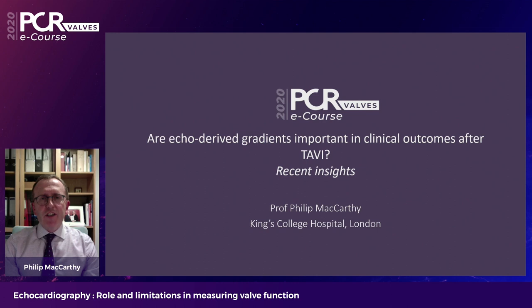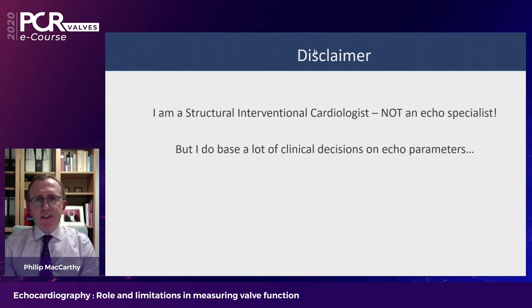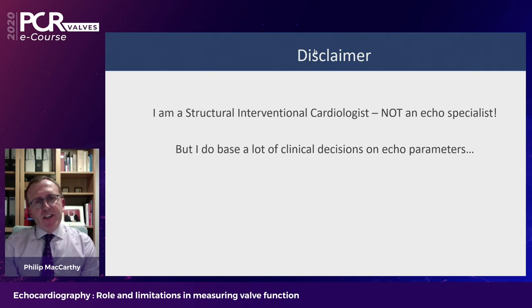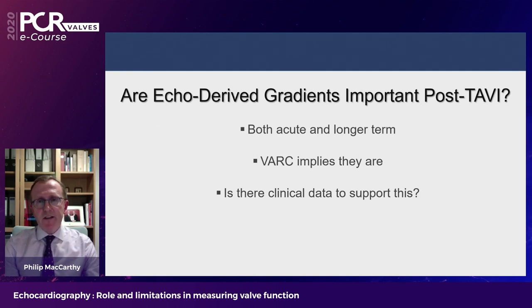Thank you Victoria for that introduction. My role here is to set the scene by talking about whether echo-derived gradients actually correlate with clinical outcomes. My presentation will raise some interesting questions and hopefully stimulate discussion. I'm a structural interventional cardiologist — I'm not pretending to be an echo specialist. But I do base many important clinical decisions on echo parameters that I've always thought I understood, until I started looking into the topics we're discussing today. The first question is: are echo-derived gradients important after TAVI? Certainly we're brought up in a culture where we're taught that they are, both acutely and longer-term, and the VARC definitions imply that they are. But is there clinical data to support this specifically after TAVI rather than surgical AVR?